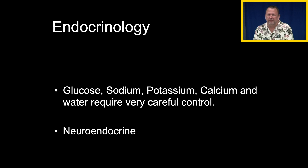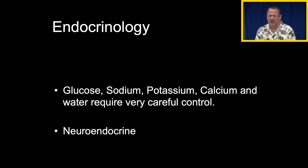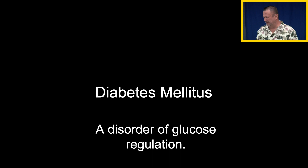If you recall from excitable membranes — neurons, cardiac conduction, muscles, myocardium — they all require very careful solutions of electrolytes, balanced with sugar and glucose. As we go through this, we're going to talk about regulating glucose, sodium, potassium, and calcium. That's where the word neuroendocrine comes from. Most endocrinology courses start with neuroendocrinology, but we're going to start with something very common, especially here in the islands — diabetes mellitus.